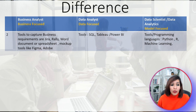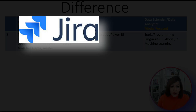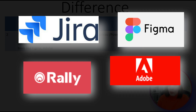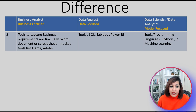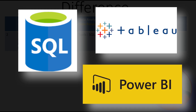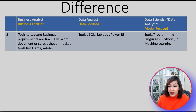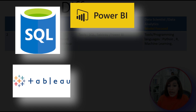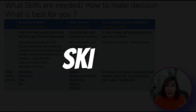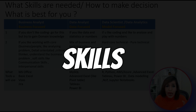For the tools used: business analysts use tools like Jira, Rally, Word documents, or spreadsheets to capture requirements, and sometimes mock-up tools like Figma or Adobe to draw designs. Data analysts use SQL, Tableau, and Power BI. Data scientists need SQL, Tableau, Power BI, and also programming languages like Python, R, and machine learning.